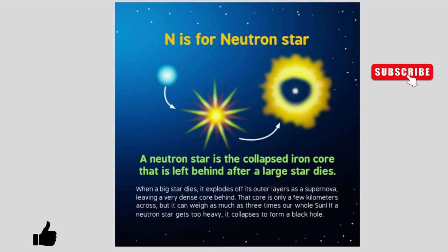N is for Neutron Star. A neutron star is the collapsed iron core that is left behind after a large star dies. When a big star dies, it explodes off its outer layers as a supernova, leaving a very dense core behind. That core is only a few kilometers across, but it can weigh as much as three times our whole Sun. If a neutron star gets too heavy, it collapses to form a black hole.